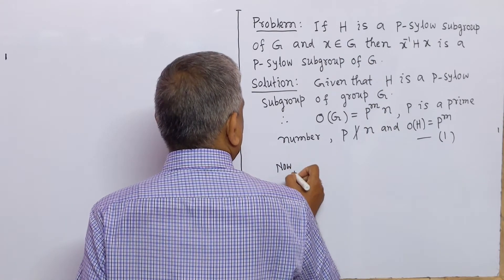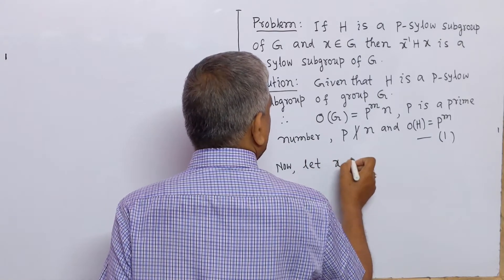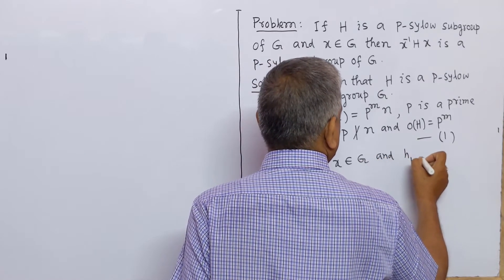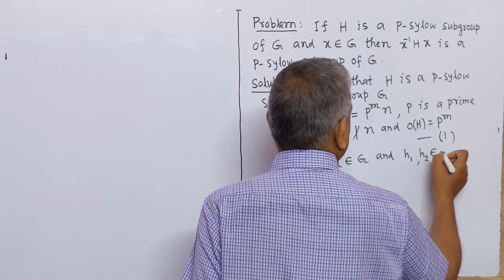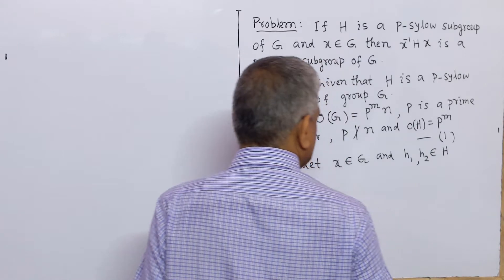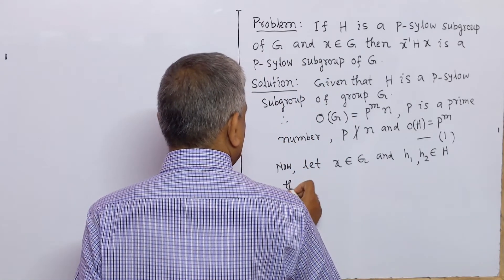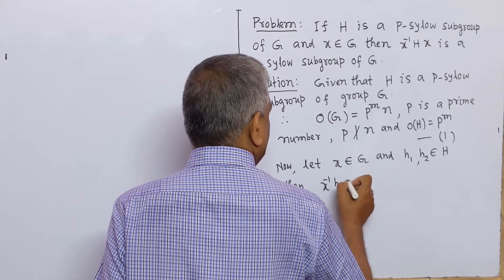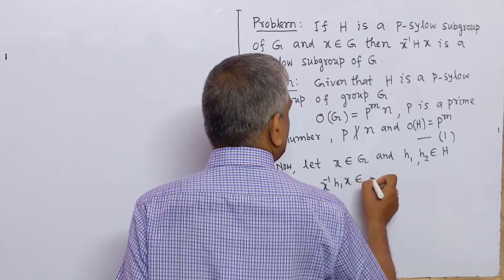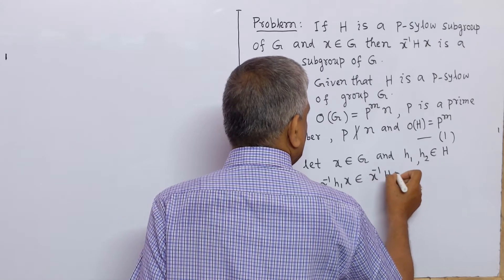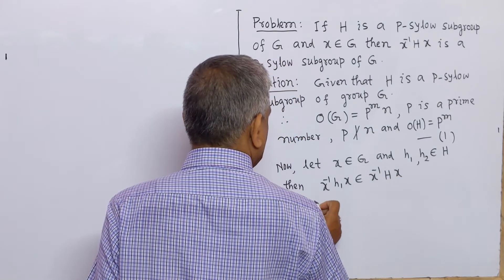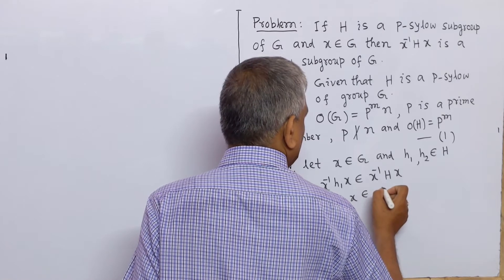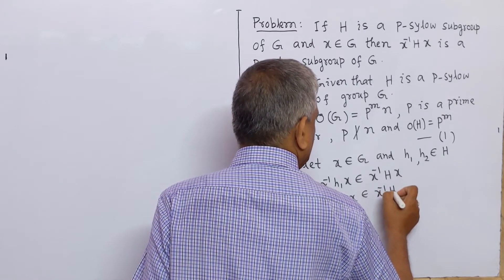Let x belong to G, and let H1, H2 belong to the Sylow subgroup H. Then x inverse H1 x belongs to x inverse Hx, and x inverse H2 x belongs to x inverse Hx.